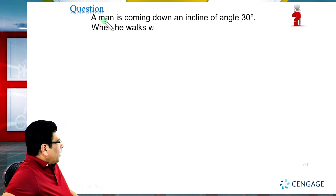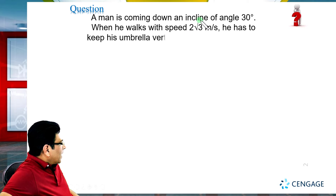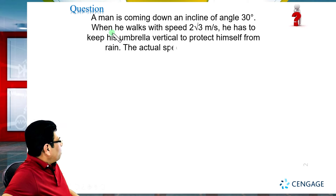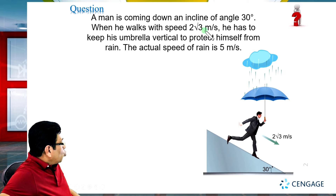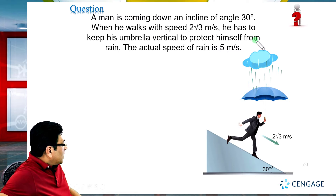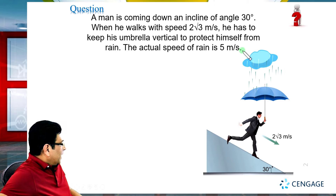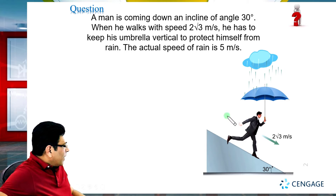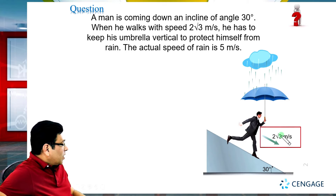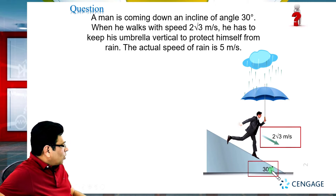In this illustration, it is given that a man is coming down an incline of angle 30 degrees. When he walks with speed 2√3 meters per second, he has to keep his umbrella vertical to protect himself from rain. The actual speed of the rain is 5 meters per second. In the diagram, the inclined plane is shown and the man is moving down this inclined plane with speed 2√3 meters per second — that means this is the velocity of the man, and we know the magnitude and direction of the velocity.